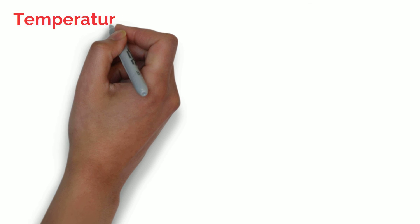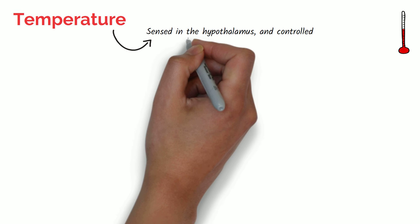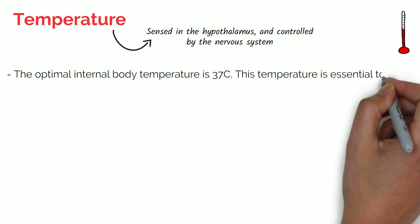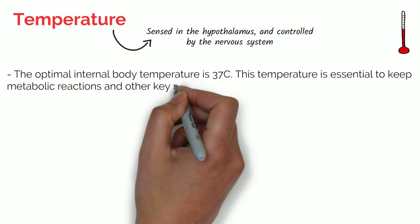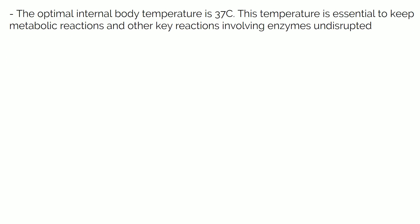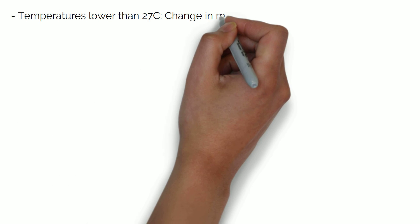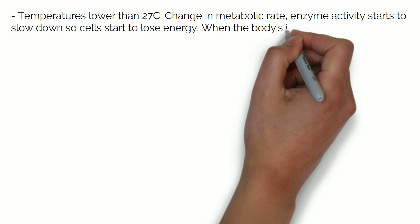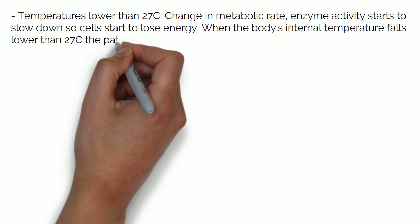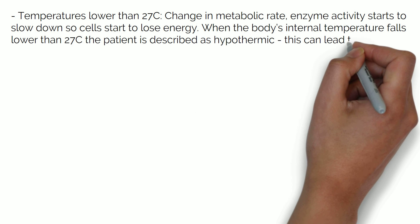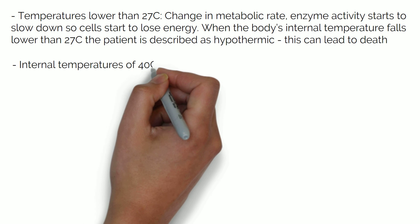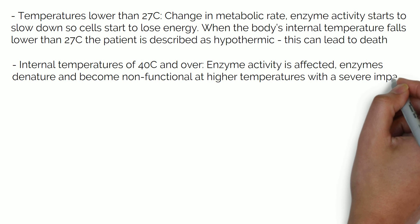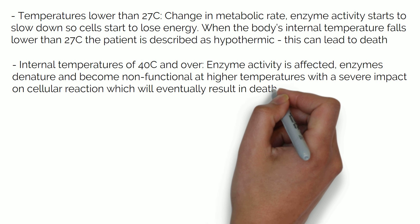Now for temperature. Temperature is sensed in the hypothalamus and is controlled by the nervous system. The optimal internal body temperature is 37 degrees, which is essential to keep metabolic reactions and other key enzyme-driven reactions undisrupted. Temperatures lower than 27 degrees result in a change in metabolic rate; when the body's internal temperature falls below 27 degrees, the patient is described as hypothermic, which eventually leads to death. Internal temperatures of 40 degrees and over start to affect enzyme activity — enzymes denature and become non-functional, severely impacting cellular reactions, which will eventually result in death without treatment.